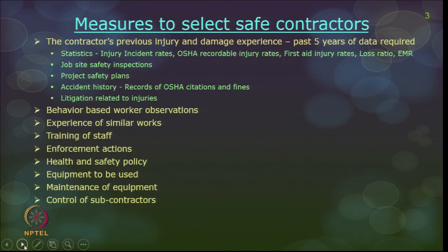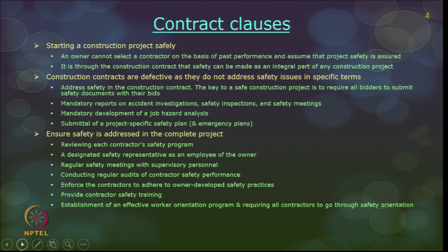Look at litigation related to injuries — whether the contractor has been involved in court trials or arbitration cases due to injuries or unexpected events in the past. Also consider how he has trained workers or staff, his control over subcontractors, his equipment availability, and maintenance policies on equipment, since equipment malfunctions can also lead to many injuries. These are statistics through which an owner can select a contractor who will be safe based on previous experiences.